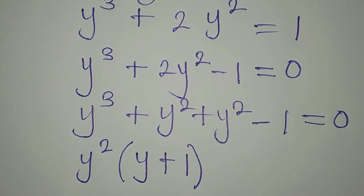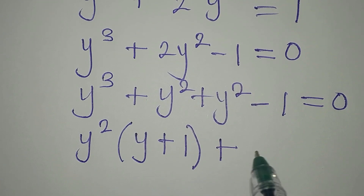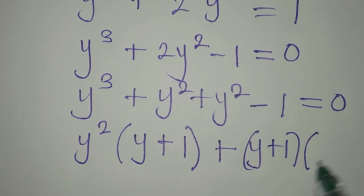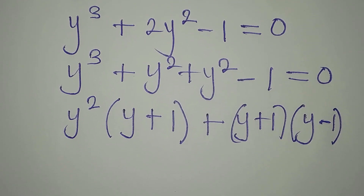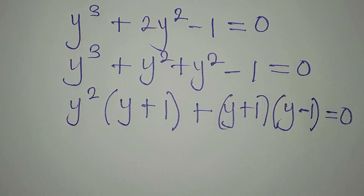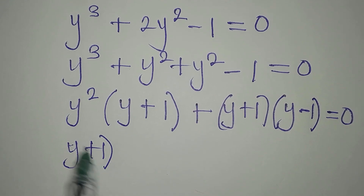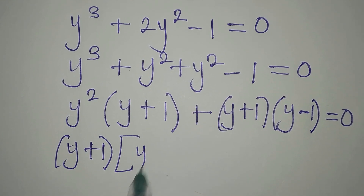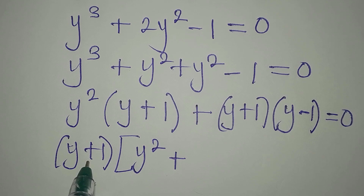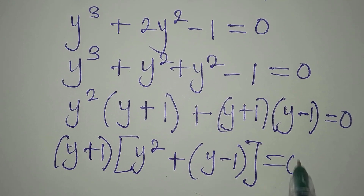Then, plus here, we can apply difference of two squares, so we are going to have (y plus 1) times (y minus 1). Everything here is equal to 0. Looking at these, y plus 1 appears in both groups, so y plus 1 is a common factor. We have y squared, and y plus 1 is already here, so we have open bracket (y minus 1). This is equated to 0.